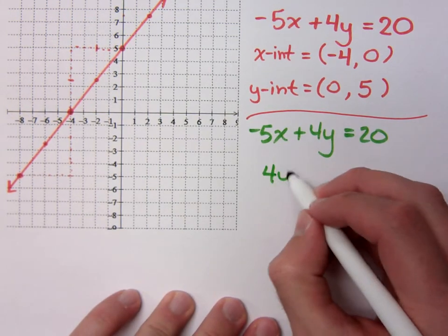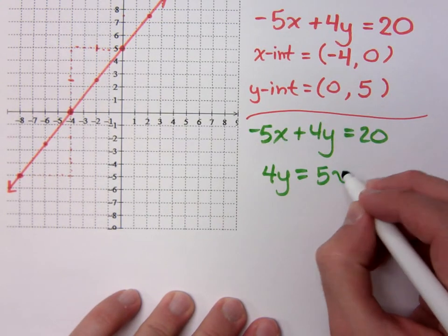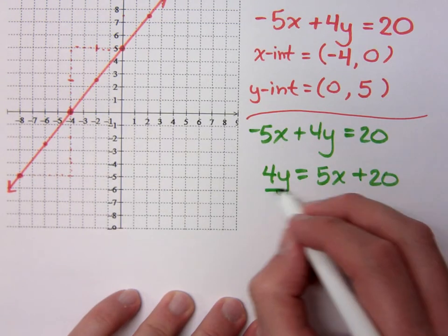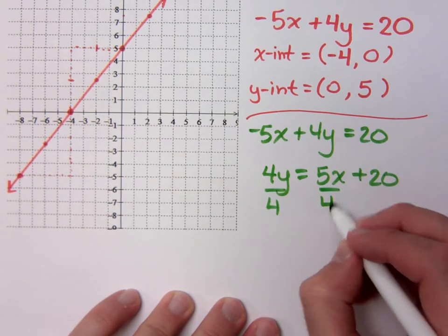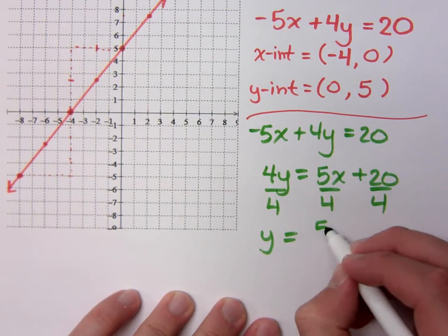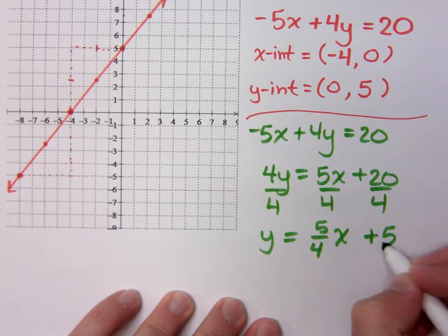If I take negative 5x plus 4y equals 20 and I solve this for y, what's the first step? When you move x to the other side, that gives me what? Positive 5x. Positive 5x, that's already a positive 20. And then do what? You divide everything by 4.